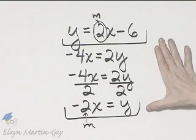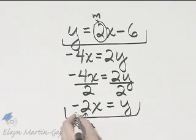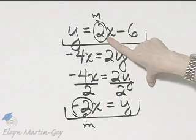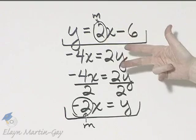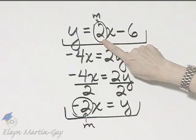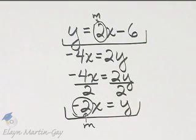So are these graphs parallel, perpendicular, or neither? Well, let's look at the slopes. The slopes are not the same, so they're not parallel. Are they perpendicular? A slope of a line perpendicular to this one would have a negative reciprocal slope. It would be negative 1 half and not negative 2. So these two lines are not perpendicular. They are neither.